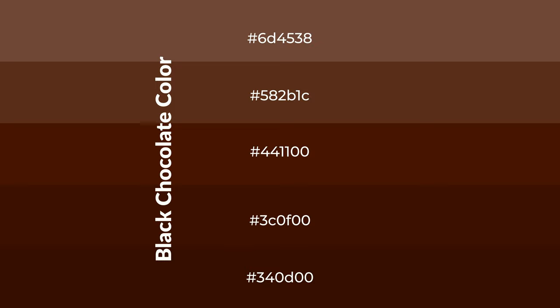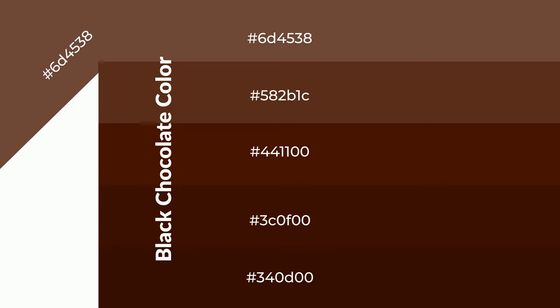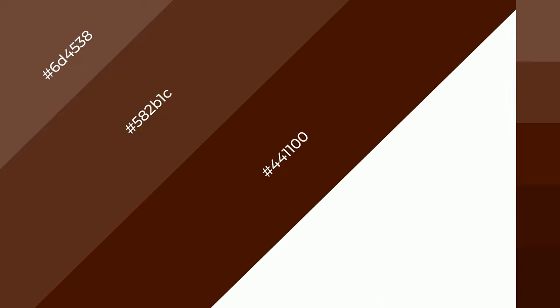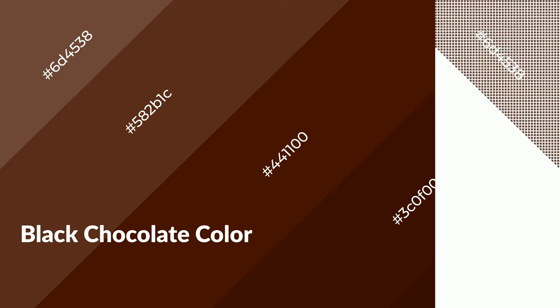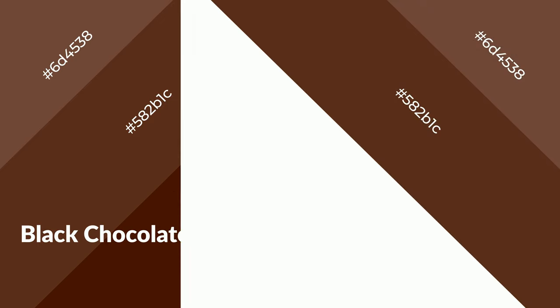To generate shades of a color, we add black to the color, and it is used in patterns, 3D effects, and layers. Shades create depth and drama. Black chocolate is a warm color and it emits cozier and active emotions. Warm colors are symbols of warmth, fire, heat, and sunshine.